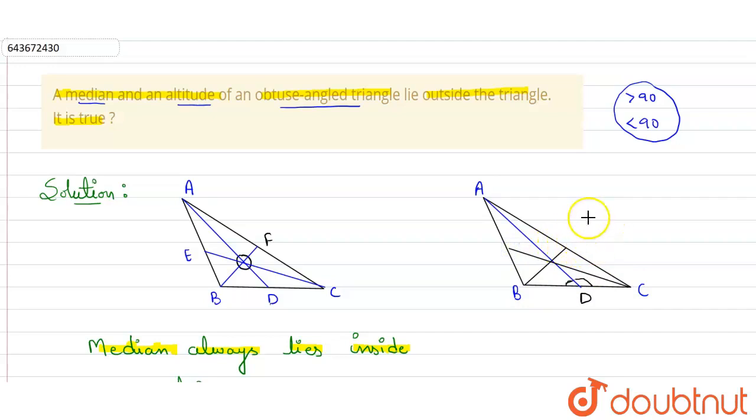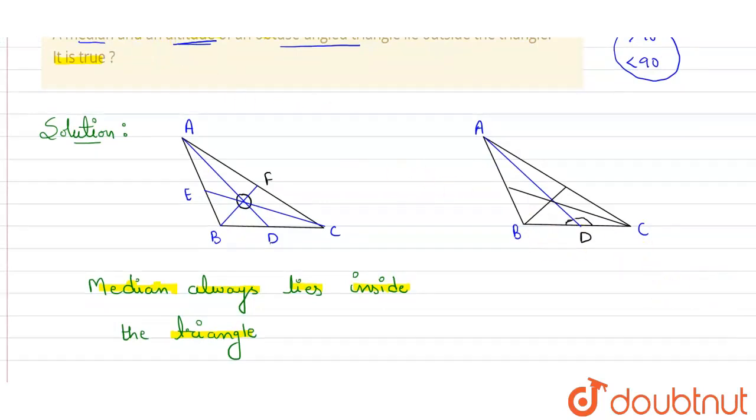So property of altitude: the property of altitude is it will meet the opposite side at 90 degrees. But here in case of obtuse angle triangle, it will not meet at 90 degrees. So we can write here, altitudes may or may not lie inside the triangle.